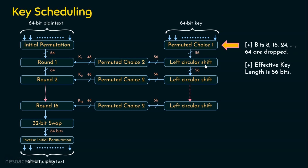After Permuted Choice 1, the next operations are left circular shift and Permuted Choice 2. Whatever we get after the left circular shift is passed to the next round, and also fed into Permuted Choice 2 to generate k1 for round 1. The same process repeats: the output goes through another left circular shift and Permuted Choice 2 to generate k2, then k3, and so on, continuing to generate all 16 round keys.